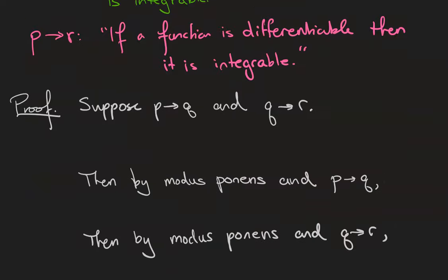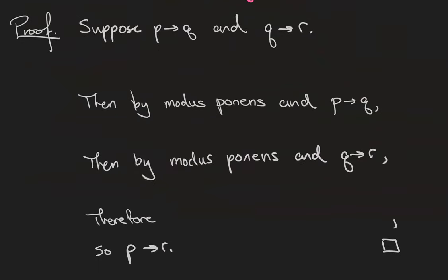Instead of proving this statement with a truth table, we're going to do something a little more informal. We're going to write down a more verbal proof. So suppose that the statements if p then q and if q then r are both true. And we're also going to suppose that p is true.